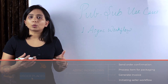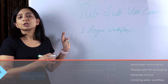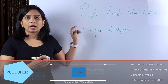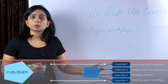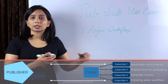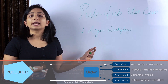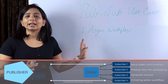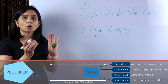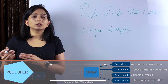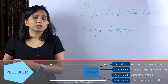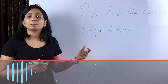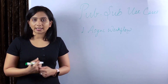When there is a requirement for async workflows, the PubSub pattern works well. A publisher sends a message like 'payout to seller', and the subscriber responsible for that money transaction can pick that message and process it asynchronously — without blocking the customer from completing their order.